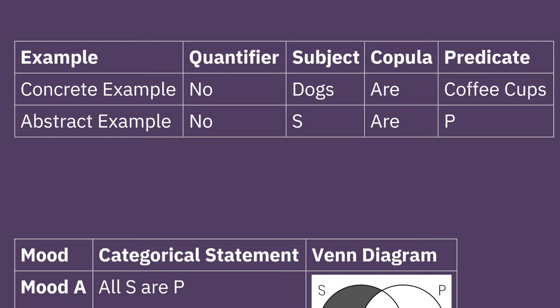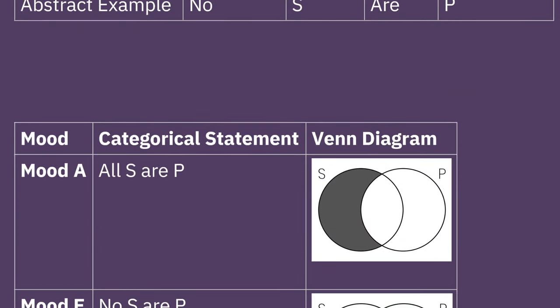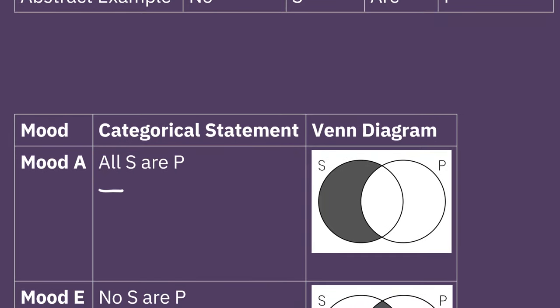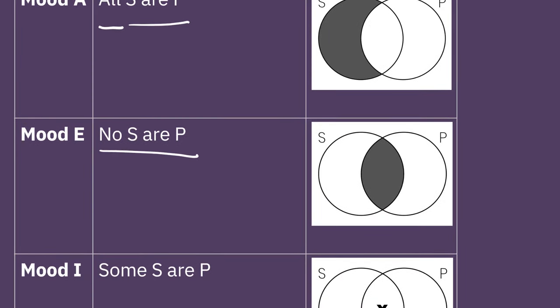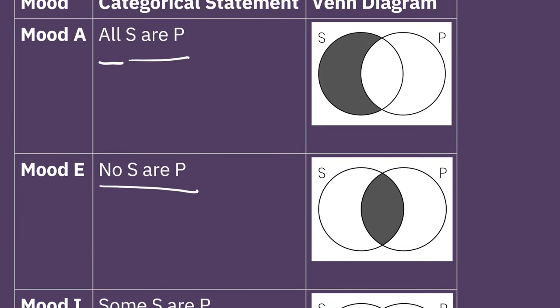We put these types of things together and we have four basic types of categorical statements. We refer to these as moods. And so here are the four moods. Here we have all S are P. Our next one is no S are P. You can see how they are related and how they are distinct.